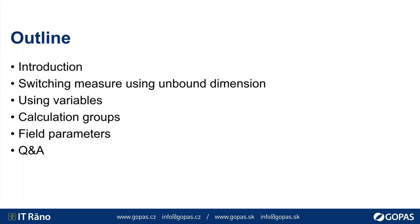Here is the outline: I will briefly introduce myself, then continue with switching measures using an unbound dimension, simplify the code using variables, and show you functionality of calculation groups and field parameters. There will also be space for your questions - you can paste them in the chat because you are by default on mute. I will use this PowerPoint presentation only as a logical outline. This session is recorded and you will be able to access the recording in approximately seven working days.